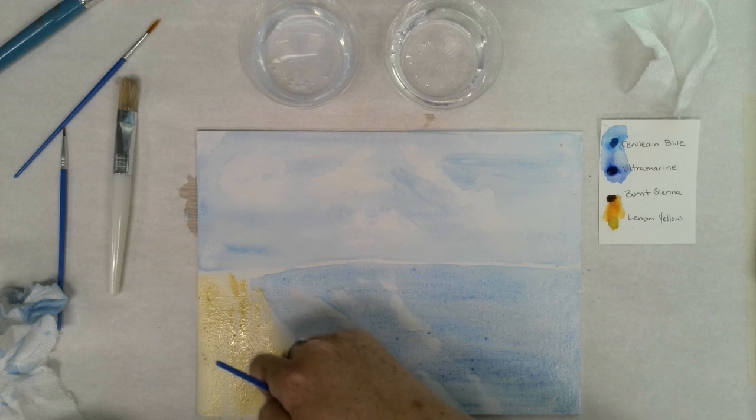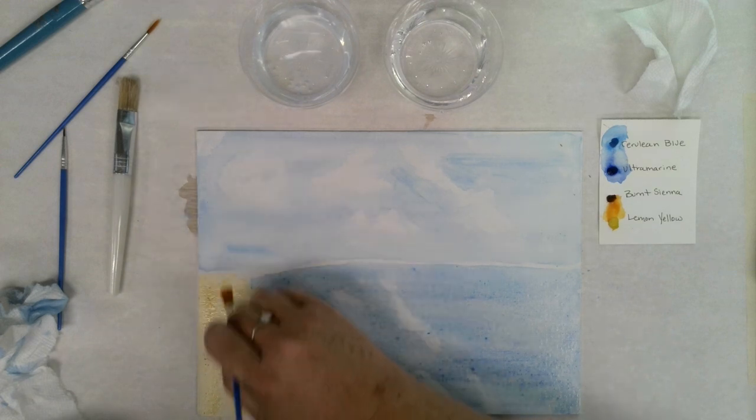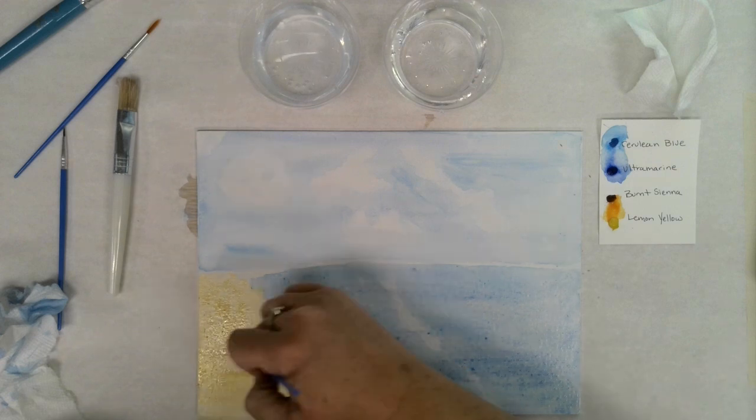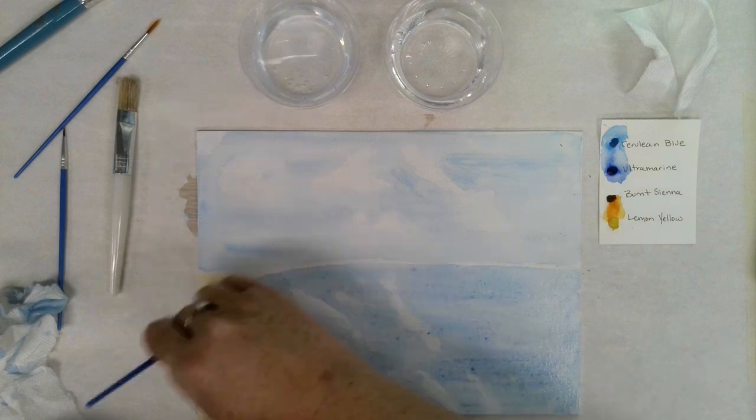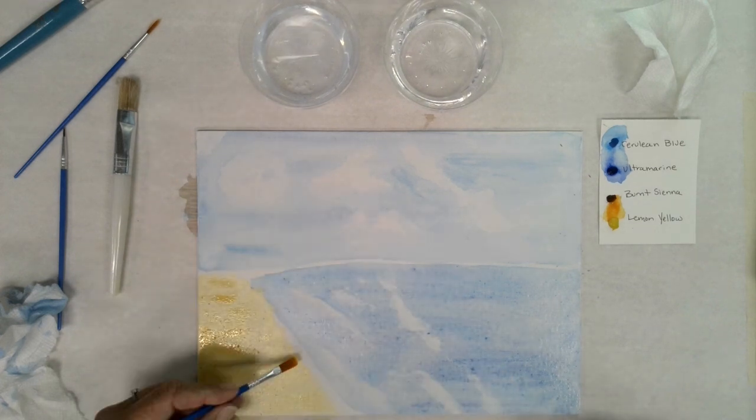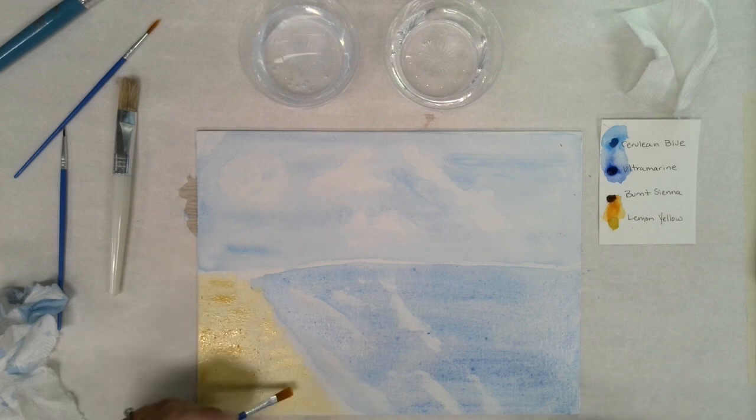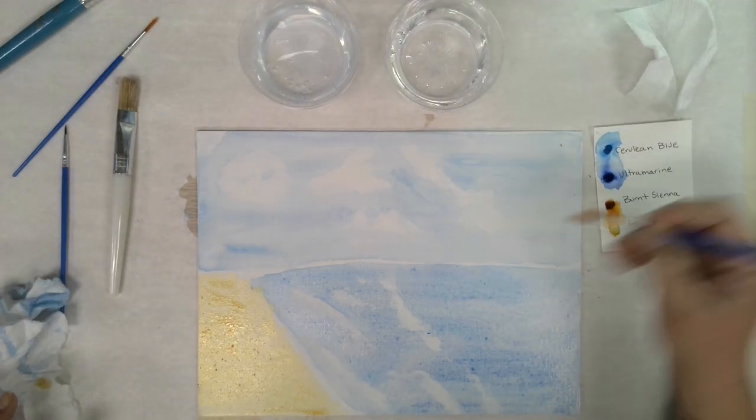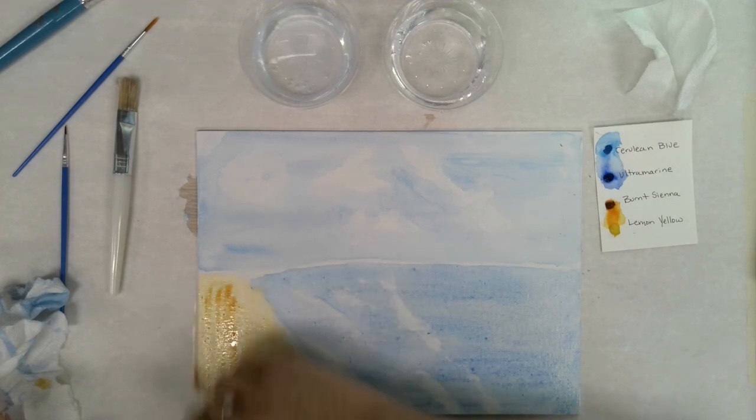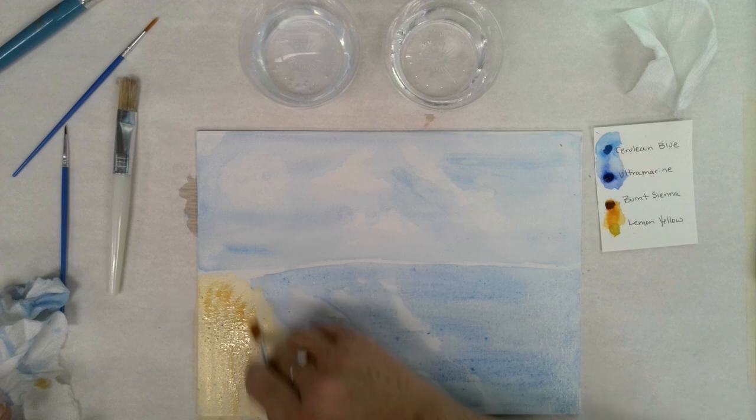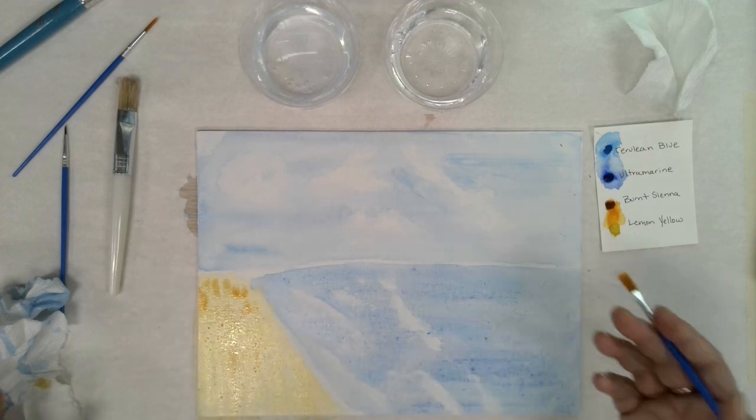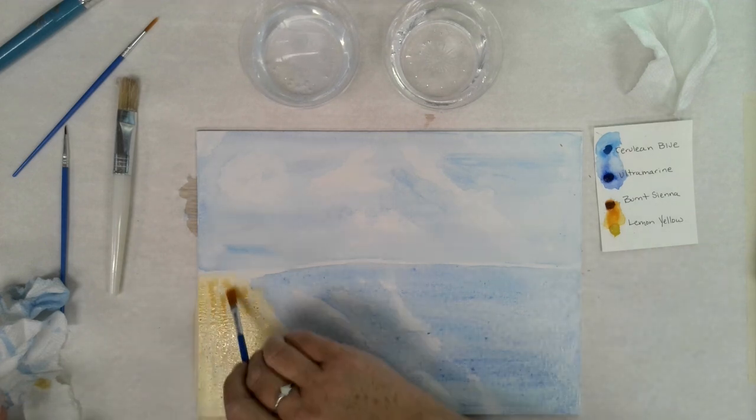I got a little close to my ocean there. That's not too bad. Now that I've done my verticals, I'm going to come through horizontal. And there I've got my sand. If I wanted, I think I want to come back through with a little bit more of just that reddish burnt sienna into there.